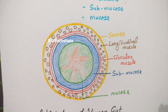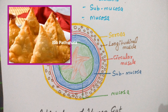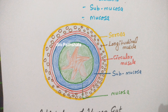An important point about muscularis: the longitudinal muscles are outer and the circular muscles are inner. Longitudinal muscles are outer and circular muscles are inner — this may seem a bit counterintuitive but we need to remember it.